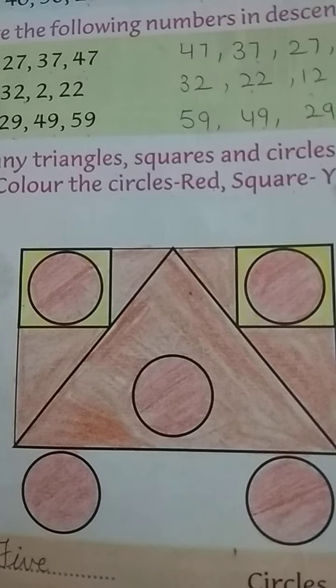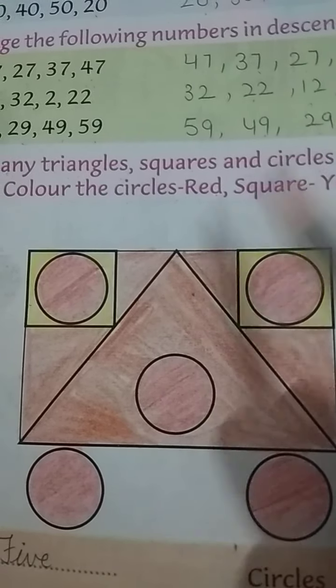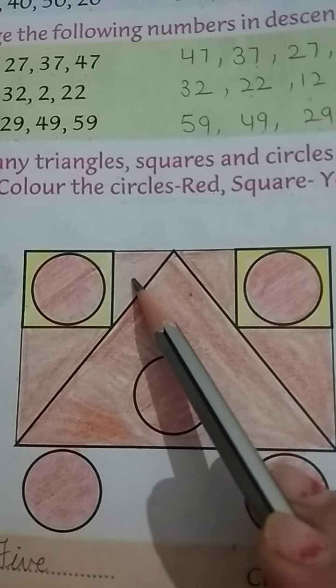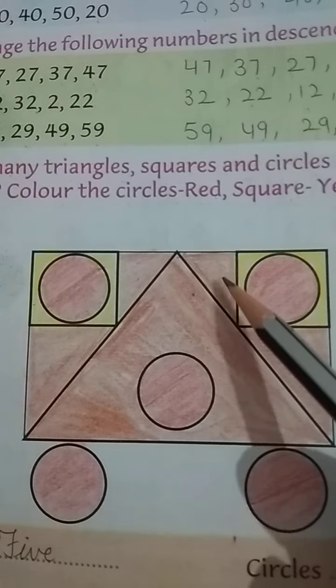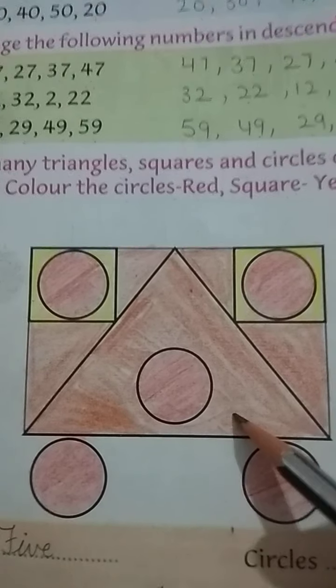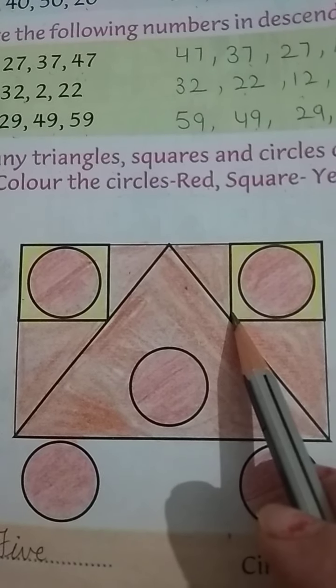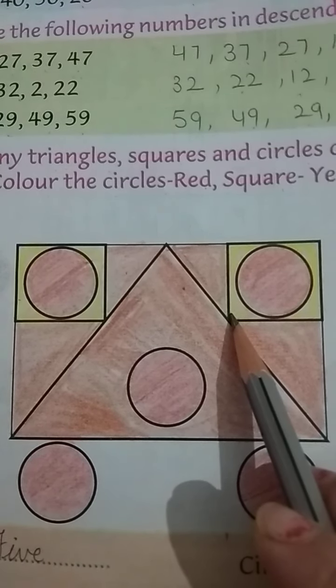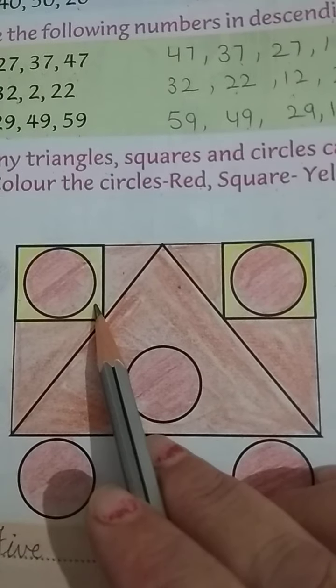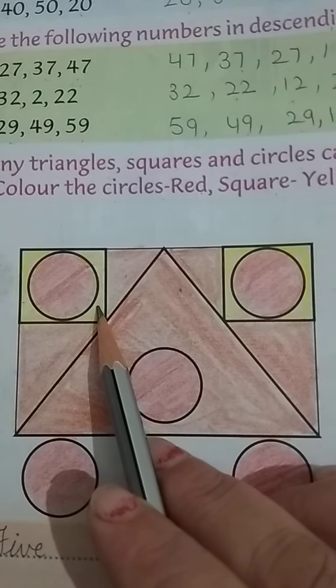Ab triangle dekho kitne. Yaha, yaha maynay brown color kiya hai. Voh triangle hai. One, two, three, four and five. Five bhi kiya hai? Triangle hai. Or square? Square ye dekho. One and two. Kitne square hai? Two.